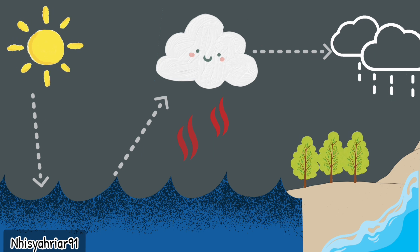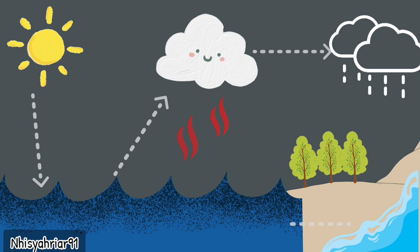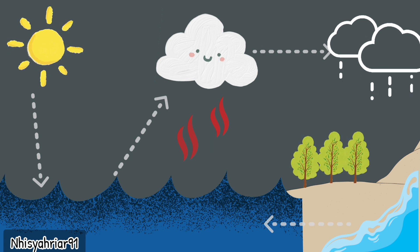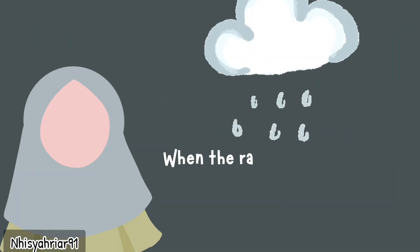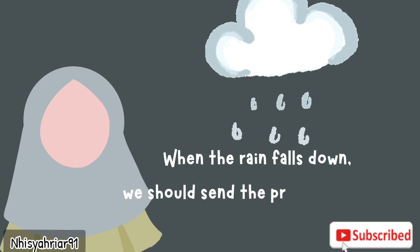If enough water condenses, the drops become heavy enough to fall to the ground as rain and snow. Some rain collects in the ground. The rest flows through rivers back into the ocean.